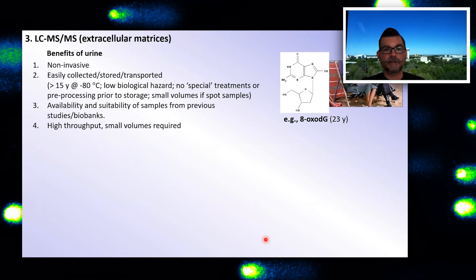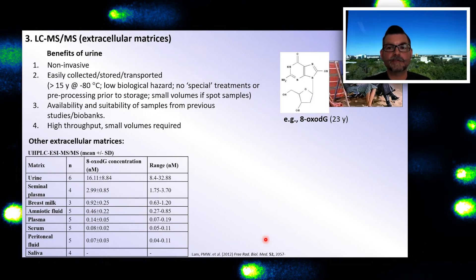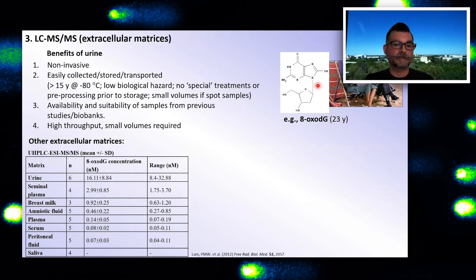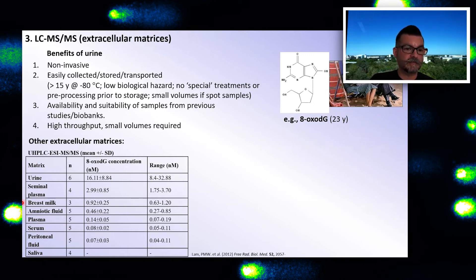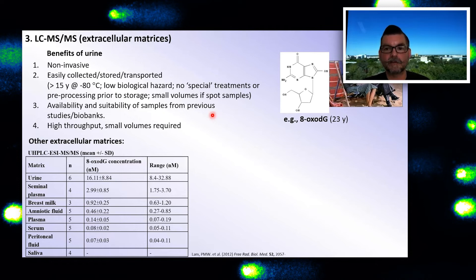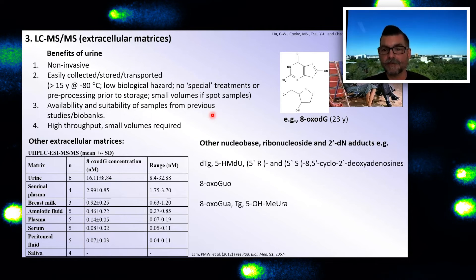Another approach involves looking at damage in extracellular matrices. We've spent 23 years looking at the particular product 8-oxo-dG in urine since we first reported on it in 1998. Really, in any fluid you can obtain from somebody, you can probably find 8-oxo-dG, which is a good alternative to relying on tissues. There are also other adducts present.